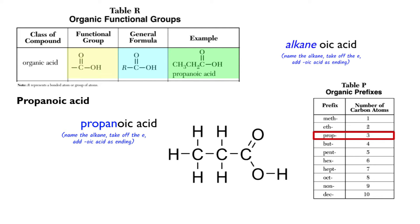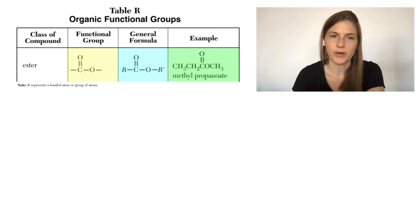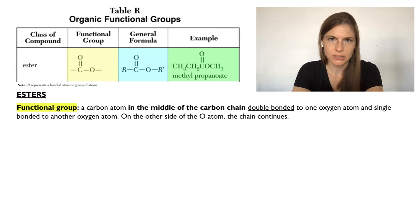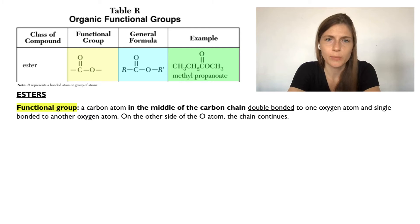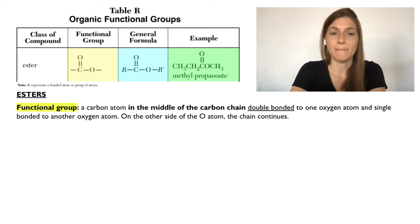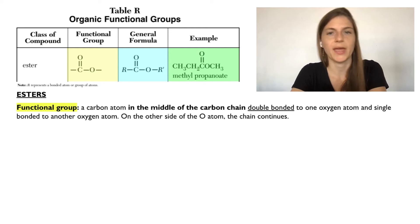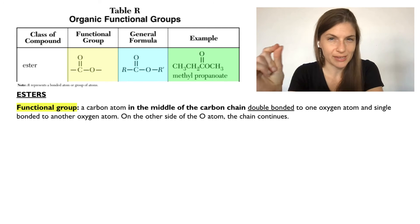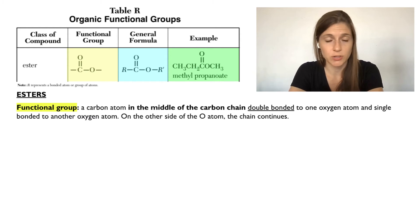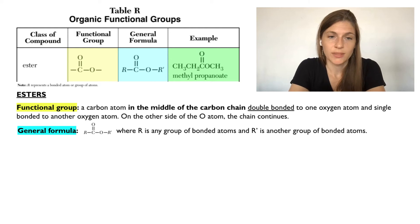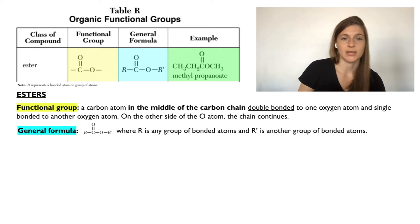Now let's look at how an ester is different. Esters look very similar to organic acids — they have that carbonyl carbon and then an oxygen single bonded to the carbon as well. The difference is that in an ester, unlike in an organic acid, the carbonyl carbon is in the middle of the chain. There is a carbon atom double bonded to one oxygen atom, then single bonded to another oxygen atom, and on the other side of that oxygen, the carbon chain continues. The general formula is R — C double bonded to O, single bonded to O — then another R group, so the chain can continue on both sides.